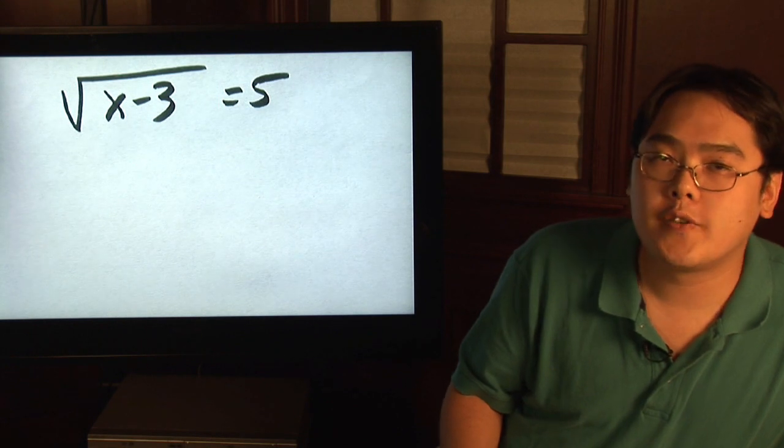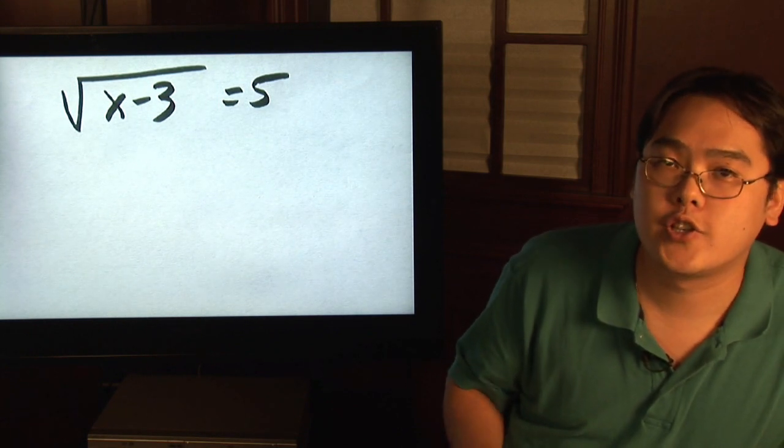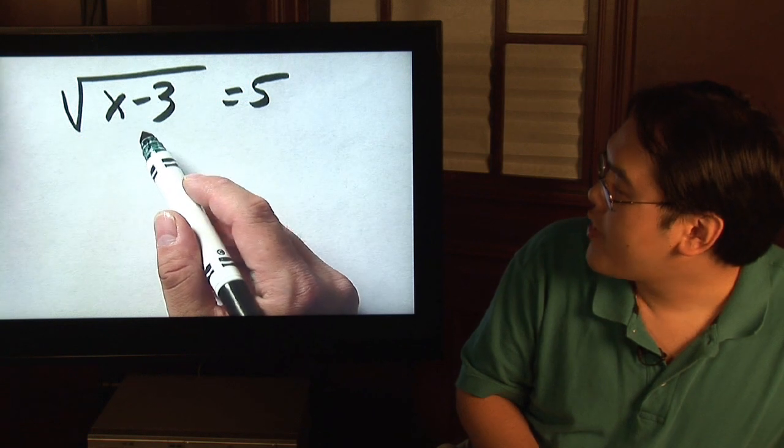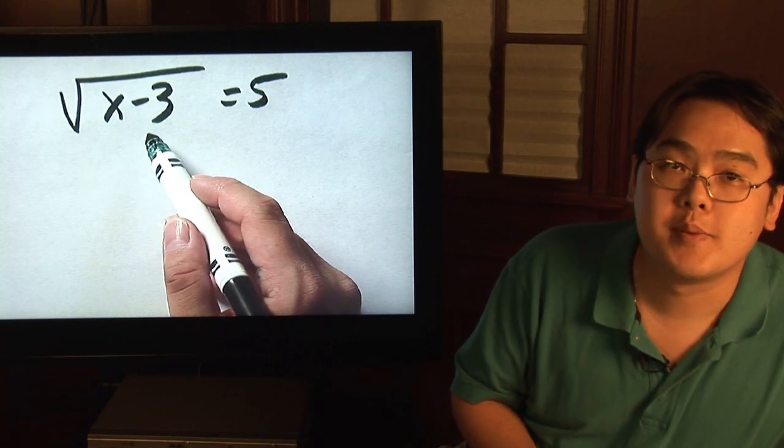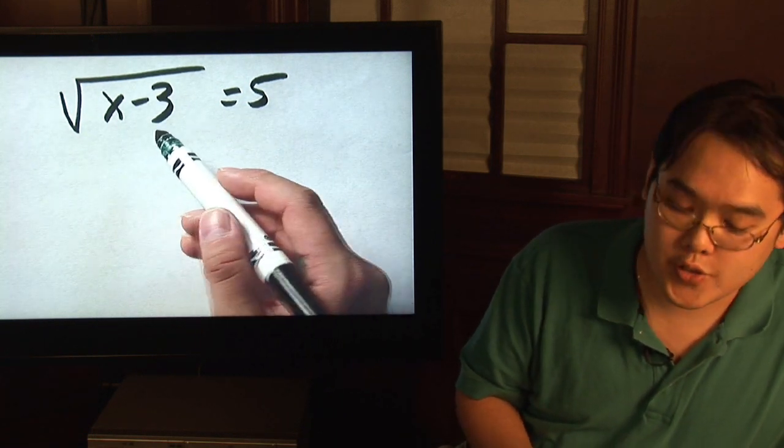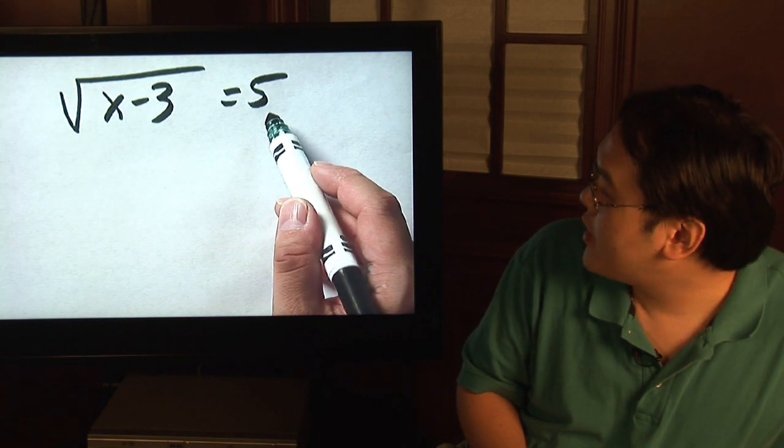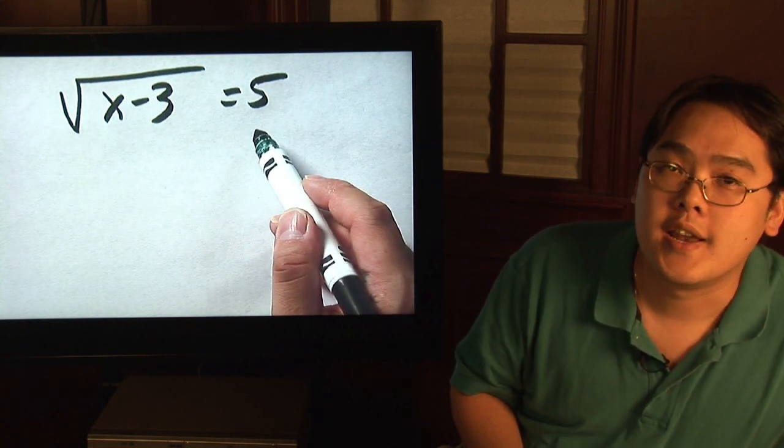In order to solve a square root equation you want to double check two things. Number one, make sure that the square root is definitely by itself, and also make sure that the number on the other side is a positive number.